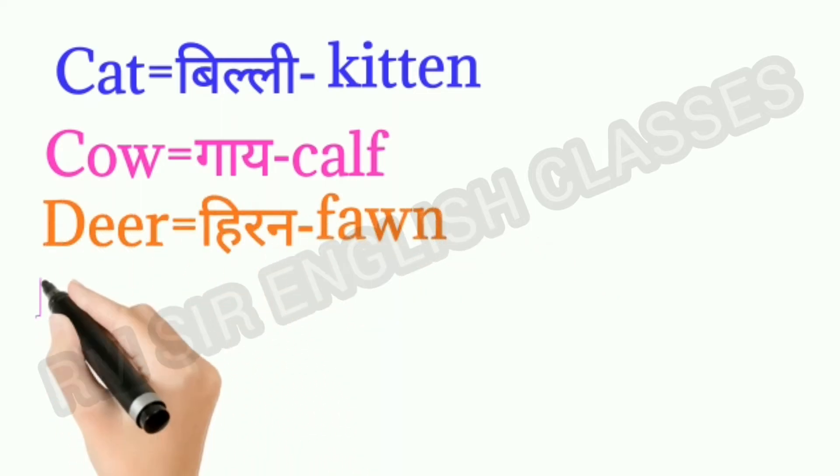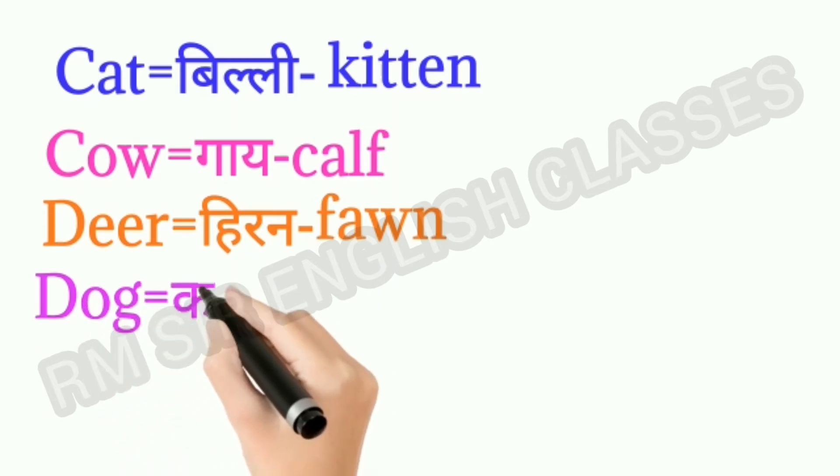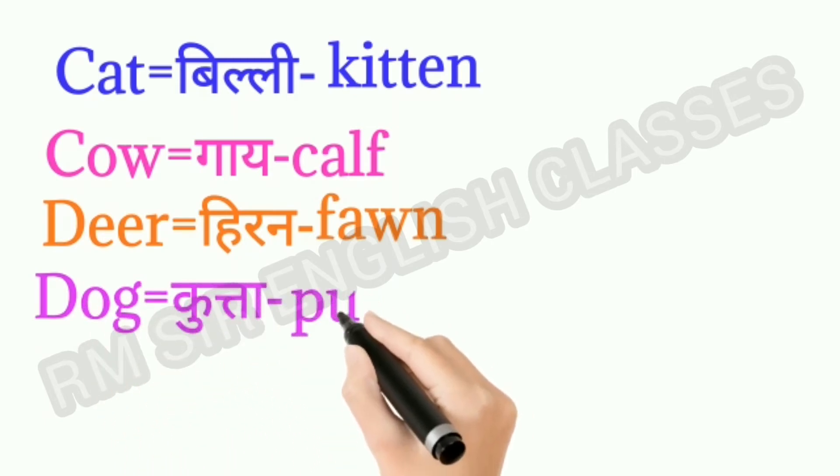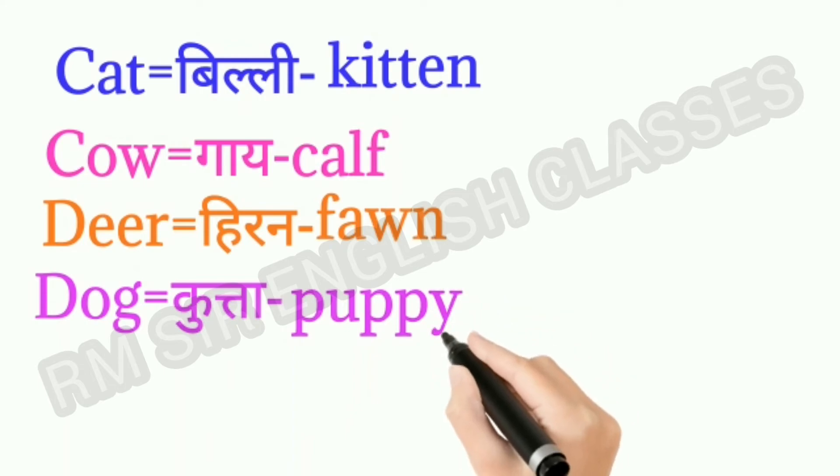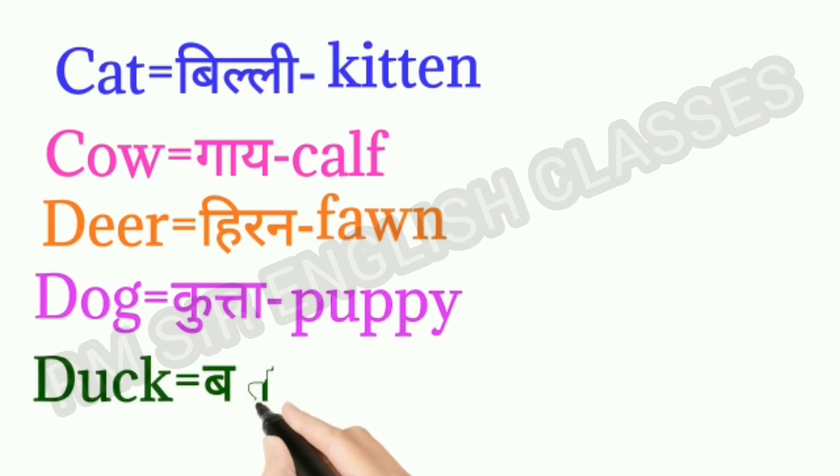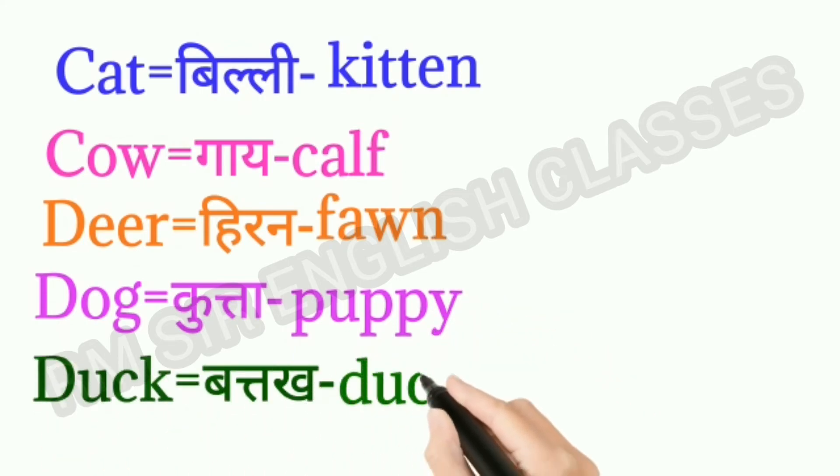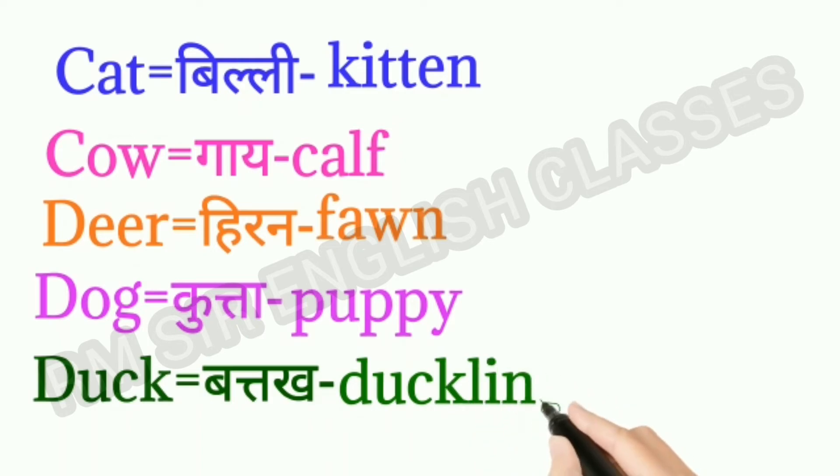Deer means hiran. The baby deer is called fawn. Dog means kutta. The baby dog is called puppy. Duck means battakh. Baby duck is called duckling.